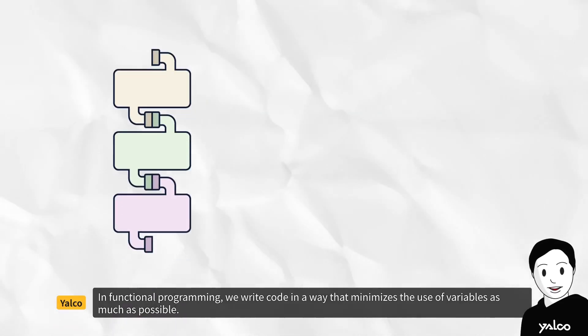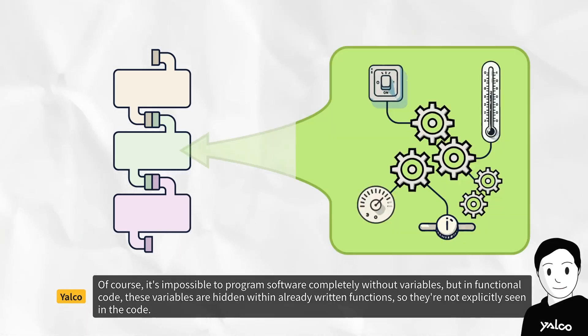In functional programming, we write code in a way that minimizes the use of variables as much as possible. Of course, it's impossible to program software completely without variables, but in functional code, these variables are hidden within already written functions, so they're not explicitly seen in the code.